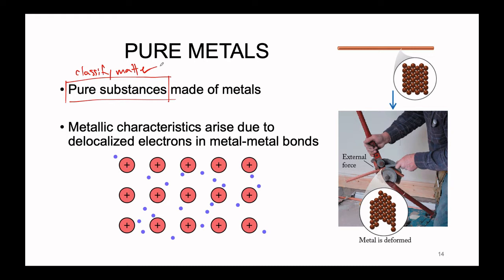We've also talked about a number of properties that metals have — for instance, high conductivity and low ionization energy. We can think back to all of those properties from the first semester in the fall. However, what we're going to introduce today is why metals have those very strange characteristics. They arise due to what we have observed to be delocalized electrons in the metal-to-metal bonds.